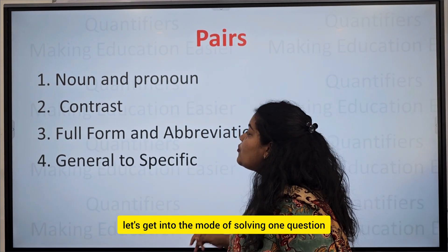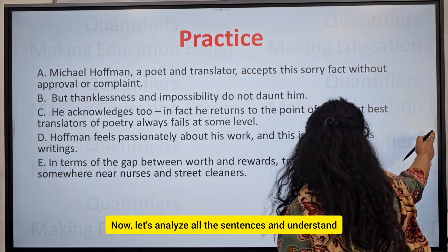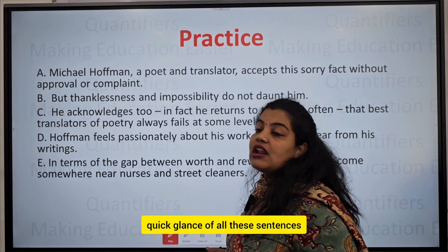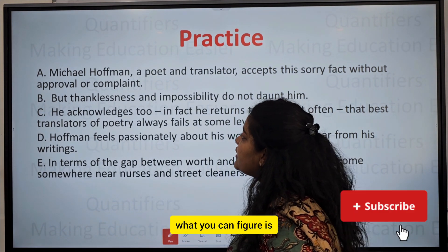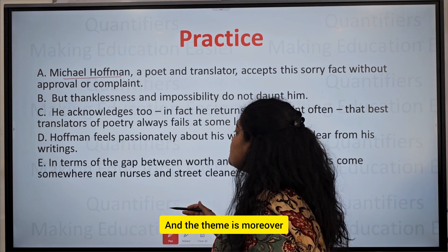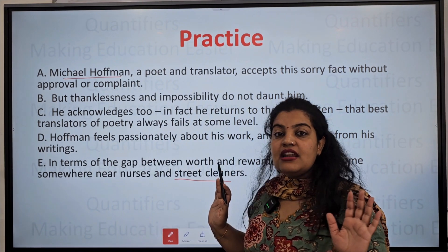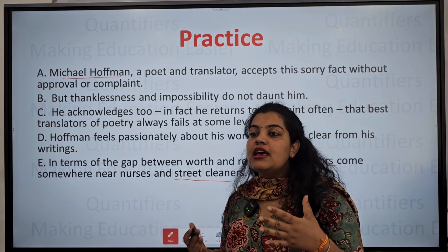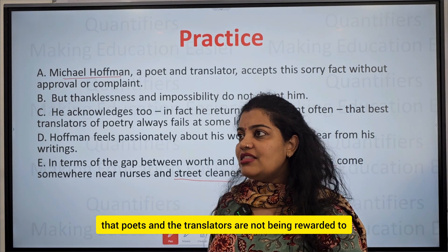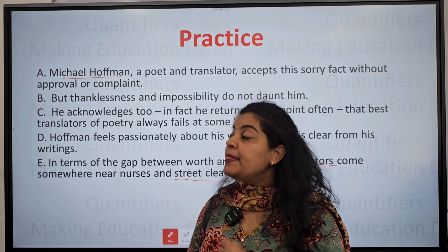With this understanding, let's solve a previous year CAT question. At a quick glance of all the sentences, we can figure out that they talk about Michel Hoffman, and the theme is that in terms of worth and rewards, translators come somewhere near nurses and street cleaners. So the subject is Michel Hoffman and the theme is that poets and translators are not being rewarded to the extent they should be.